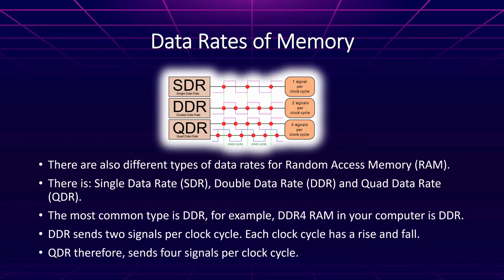There are also different data rates of memory. With random access memory we use double data rate — it's the most common type. If you have DDR3 or DDR4 RAM in your computer, that's using double data rate. Essentially, a data rate signifies how much data is being sent per clock cycle — one signal, two signals, four signals, eight signals, etc. We denote this by calling it different types: SDR means single data rate, DDR means double data rate, and QDR means quad data rate.